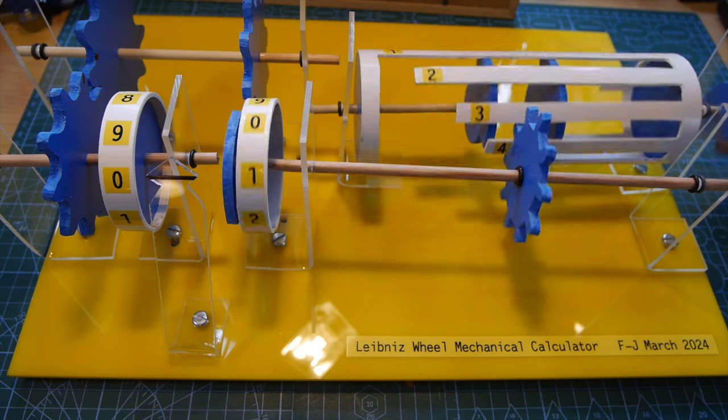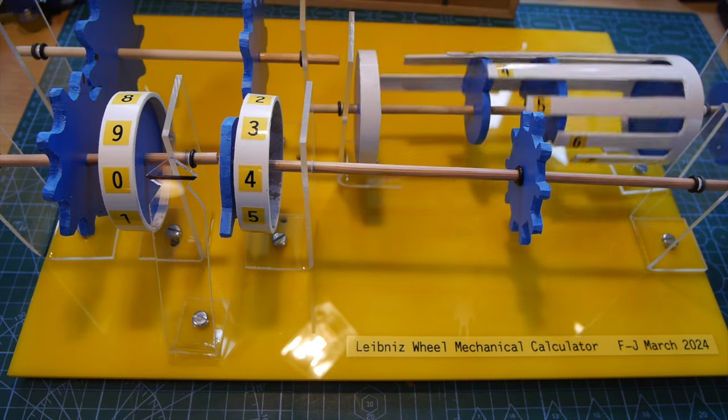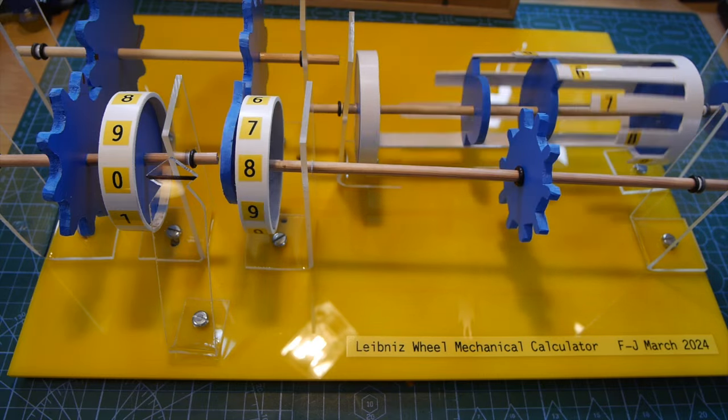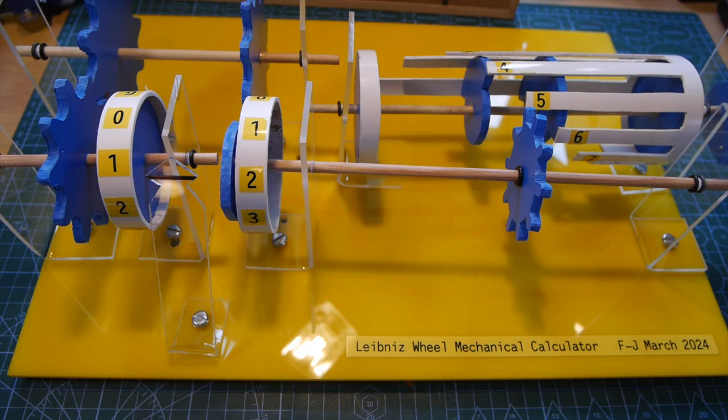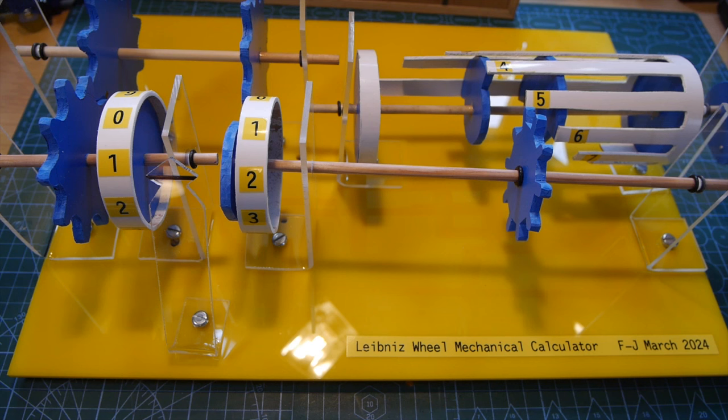Now that we've seen how entering individual digits into the calculator with whole turns of the Leibniz gear can be used to multiply four by three which is the same mathematically as entering four plus four plus four, we'll now look at a slightly more difficult calculation.